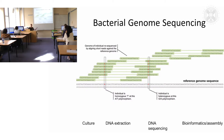E. coli for example has loads of sequenced strains, so it's easier to get a reference sequence. Other things that are less studied, you don't tend to get it, and it makes the phylogenetics much more difficult. You've got your reference genome and you align these reads to it, so you want something that's quite closely related — if it's not closely related, nothing's going to map to it.